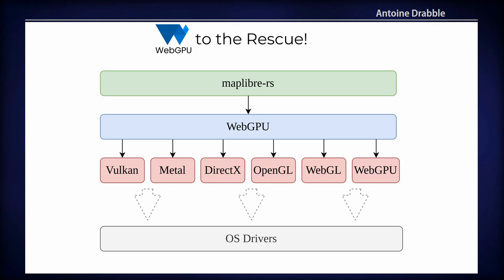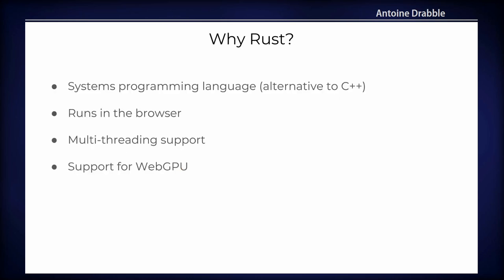Any WebGPU application is structured like this: you have an application on top targeting the WebGPU specification, which below reaches all graphics APIs — Vulkan, Metal, DirectX, OpenGL, and so on — and below that the OS drivers and graphics cards. The reason we use Rust is that it's a systems programming language alternative to C++. Rust makes it easy to run in a browser, makes multi-threading easy, and there's a Rust implementation available that implements WebGPU, which eases our development.